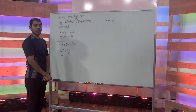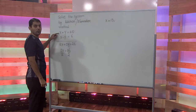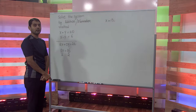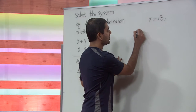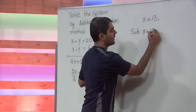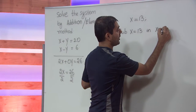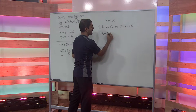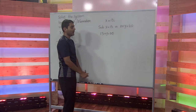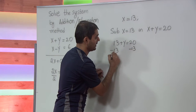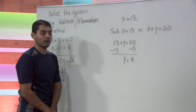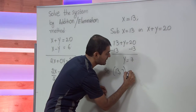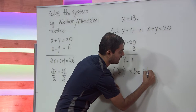Now to find the value of y, we substitute x equals 13 into equation 1 or equation 2 — no matter which equation we use, we get the same value for y. Substituting x equals 13 in the first equation x plus y equals 20 gives us 13 plus y equals 20. Isolating y, we get y equals 7. So x equals 13 and y equals 7 is the solution to the system.